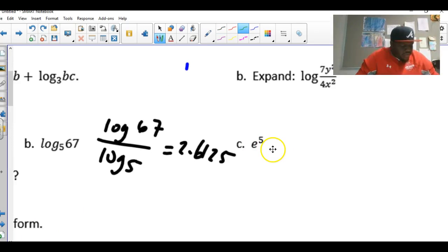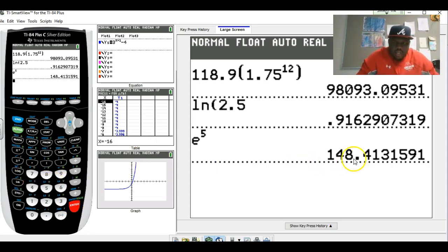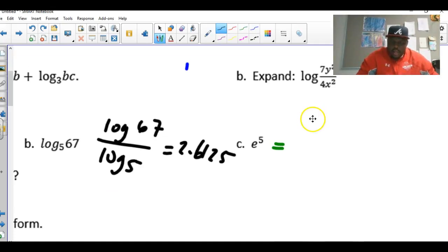So for this next one, e to the fifth, again, plug it in your calculator. When you do, let me show you where e is. It's right here where natural log is, that's natural log. If you press second and e, natural log second, there it is right there. So e to the fifth, and that gives us 148.4132. So let's write that in, equals 148.4132.